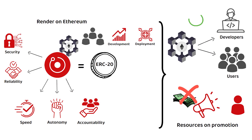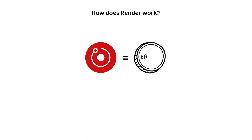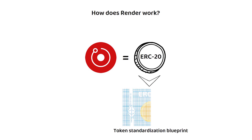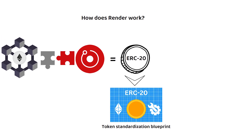This is a plus as it is more time and energy that can be put into making the best product possible, well, at least in theory. But how does Render work exactly? As Render is an ERC-20 token, it behaves like most other ERC-20 tokens. To quickly make sure we are all on the same page, an ERC-20 token is a type of token standardization blueprint that ensures compatibility with the Ethereum network. The main benefit here is high liquidity.